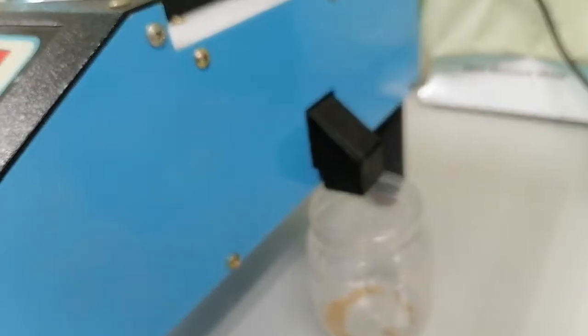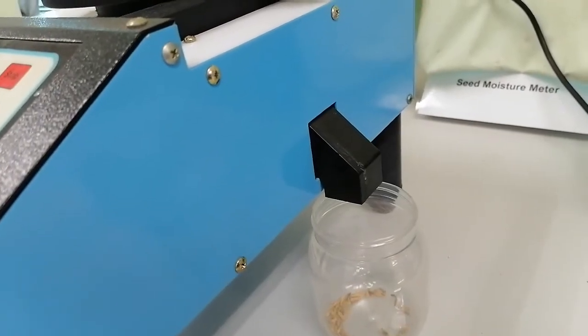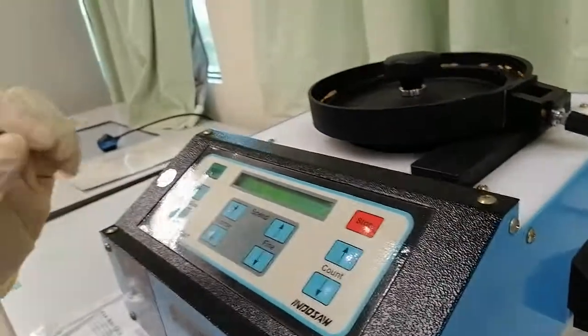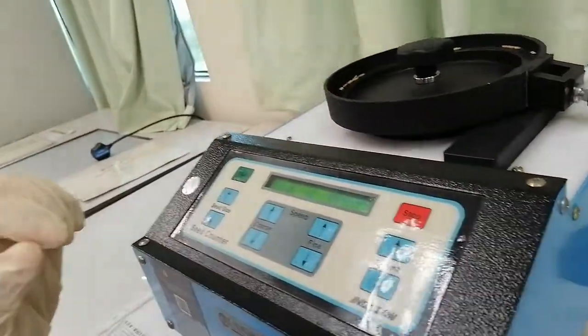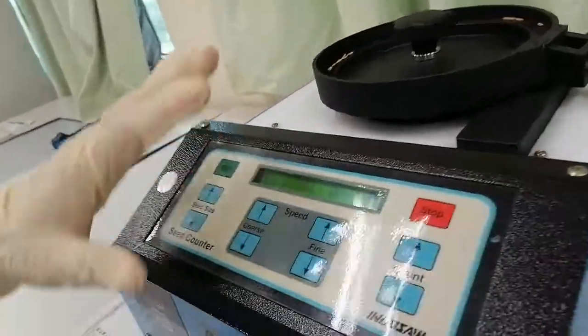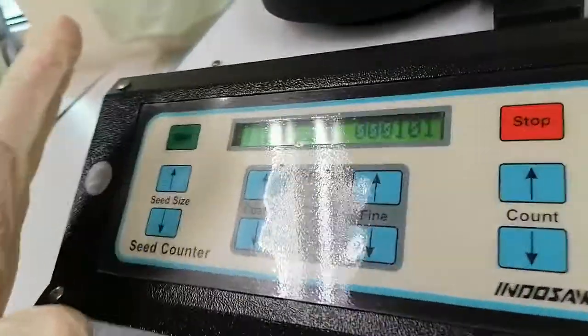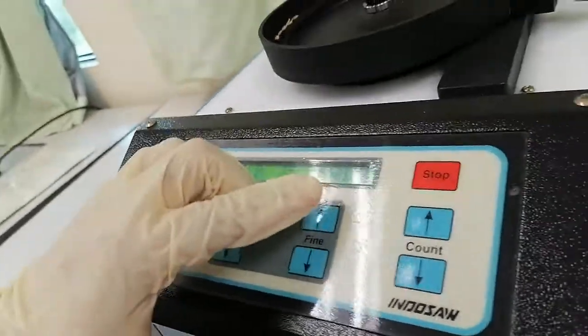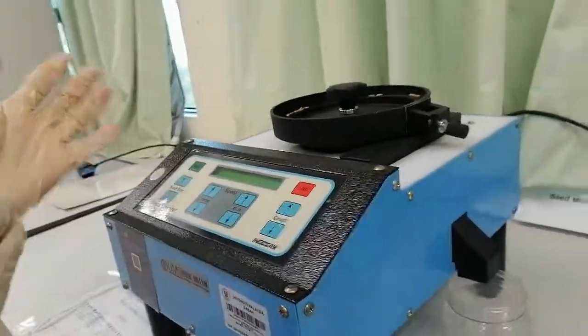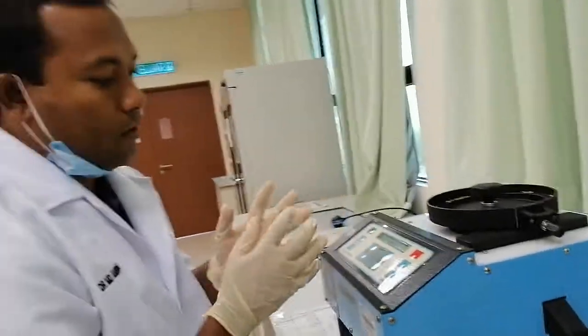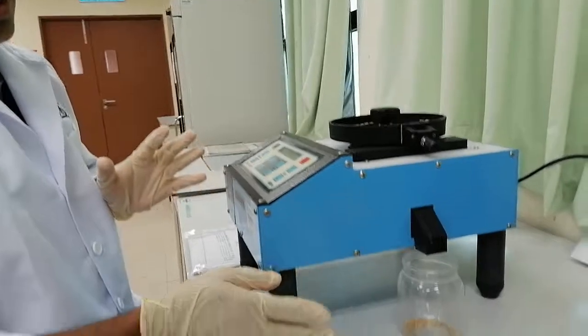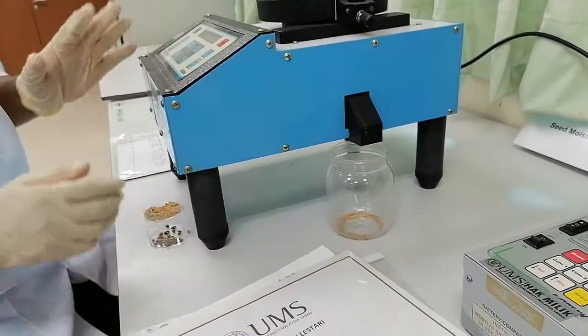By this way we can count the seed, but here better we should reduce the speed if the seed is smaller. When the number is reached 100, then automatically the machine will off. So you can see 101, so in 101 the machine is automatically off. Very easy to control it. No need to worry about 100 seed. When 100 seed is already reached to the reservoir pot, the machine will off.